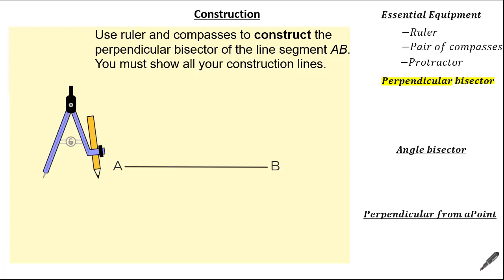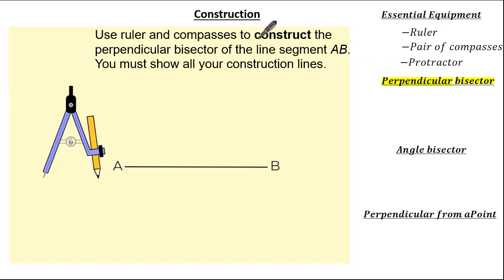Let's start with constructing a perpendicular bisector. You'll need a ruler and a pair of compasses. Perpendicular means where two lines meet they make a right angle, and bisector means to cut in half. The question states we have to use a ruler and compasses to construct the perpendicular bisector of the line segment AB and show all construction lines — cutting the line in half with lines at right angles to one another.